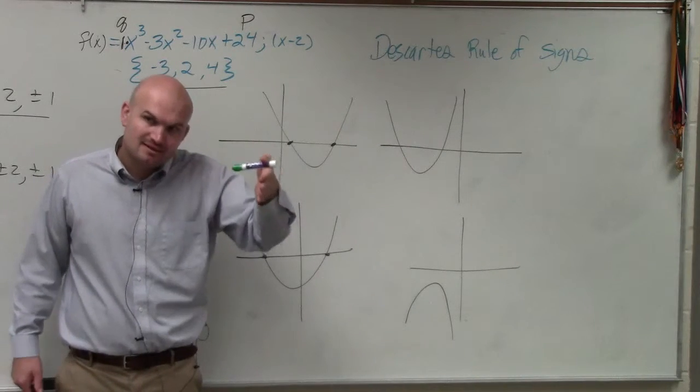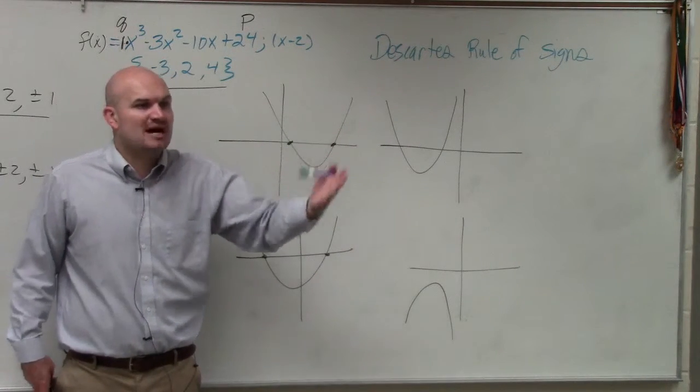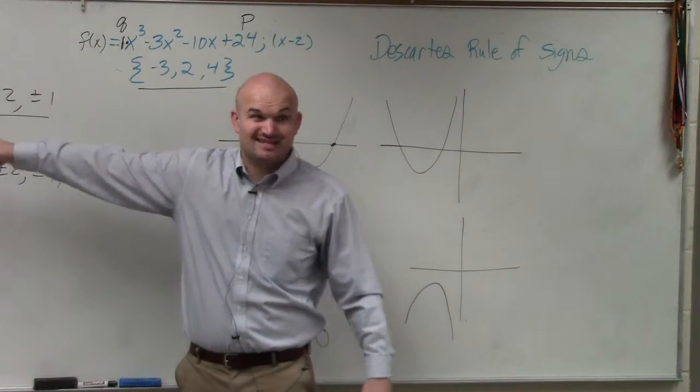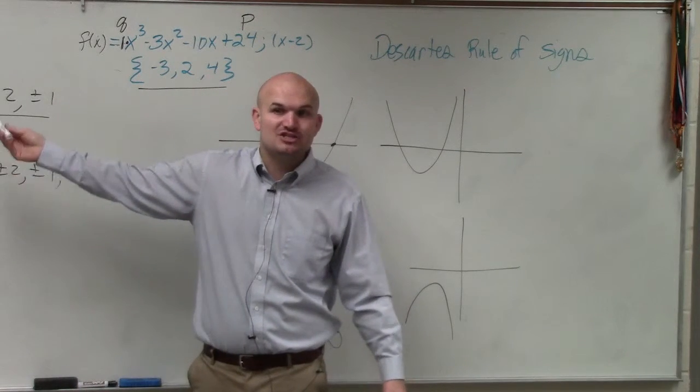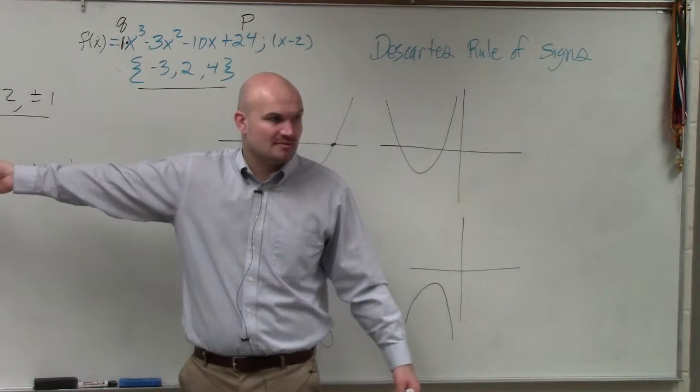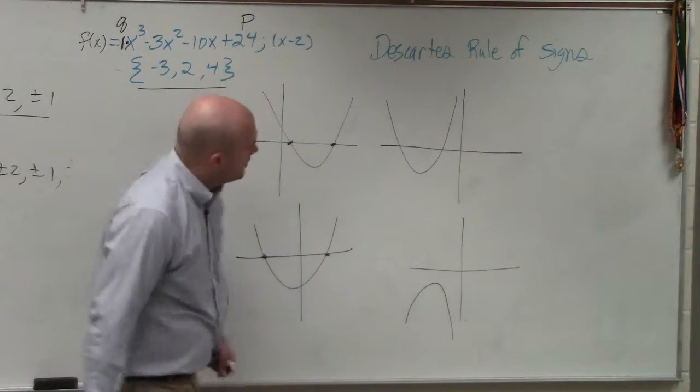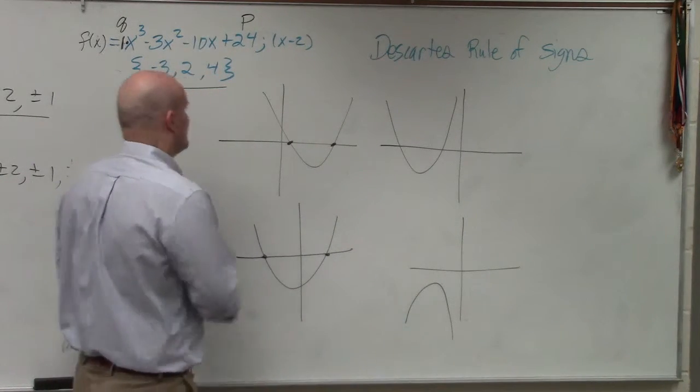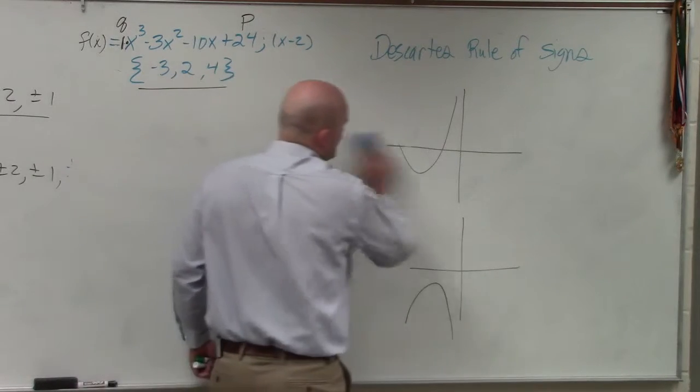how many real negative, and how many complex is possible for the problem. It doesn't tell you exactly what you have, but it just tells you what's possible. Kind of like how the rational zero test. It doesn't tell you what the zeros are, it just tells you what the possible zeros are. So to do that, the first one is usually the easiest, and the one that students always remember.